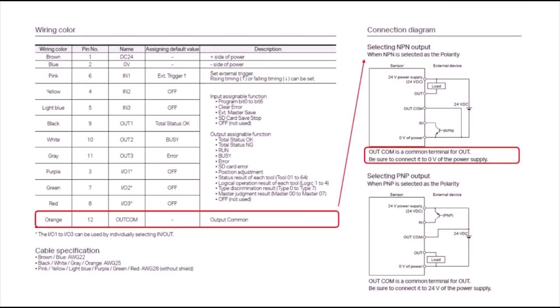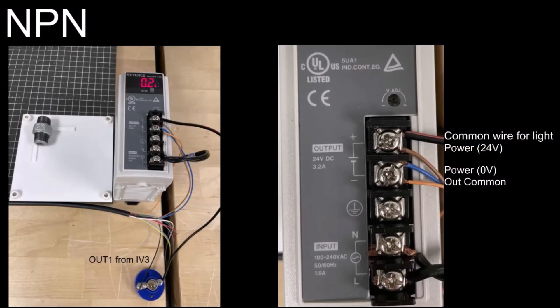Now let's say instead you want to do an NPN setup for a 0-volt signal. We just need to change where the output common is wired, and we also need to change the polarity in the software. Here's my wiring for NPN. You can see again my black output 1 is going to my light.